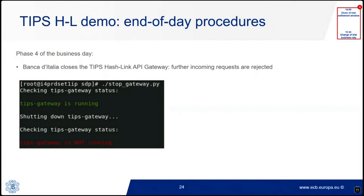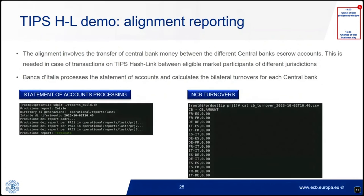With real-time settlement completed, we move to the last phase of the business day schedule — phase four, from 2 p.m. until 3:30 p.m. During this time, end-of-day procedures are executed. Banca d'Italia closes the TIP/HashLink API gateway A2A channel, and any further incoming requests are rejected. The end-of-day procedures performed in phase four are: alignment reporting to all central banks, burning of the exploratory liquidity, and creation of reports to support the central bank defunding process in T2.